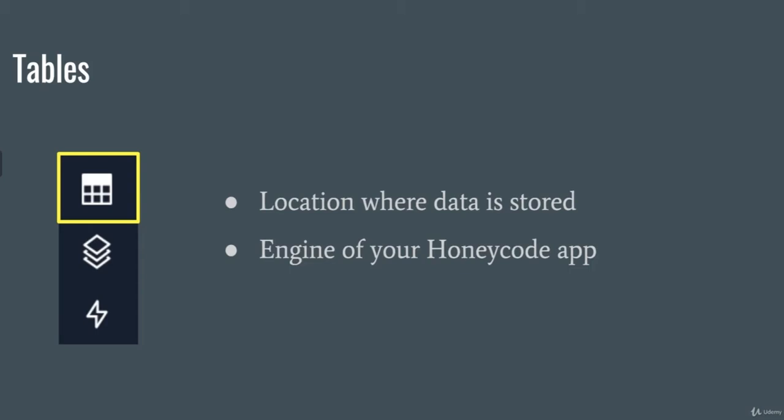Tables work just like a spreadsheet — it's basically the spreadsheet of your app. This is where all your data is being stored, and your app takes all this data and makes it look nice. There are three main things that tables can do in Honeycode: sort, filter, and link your data.